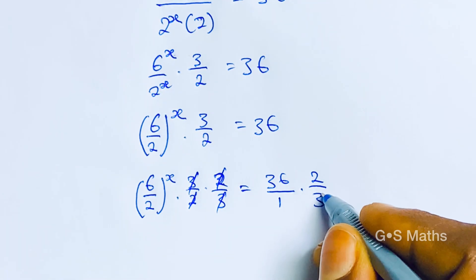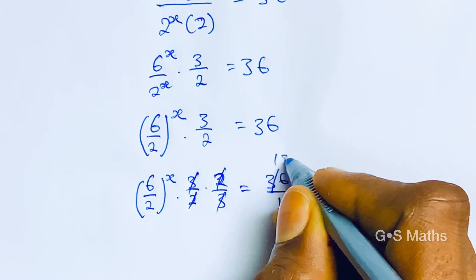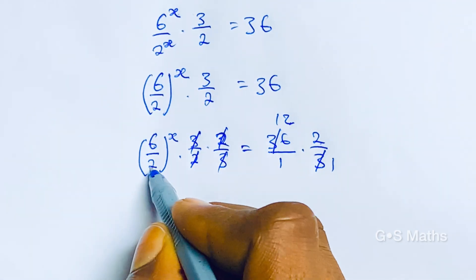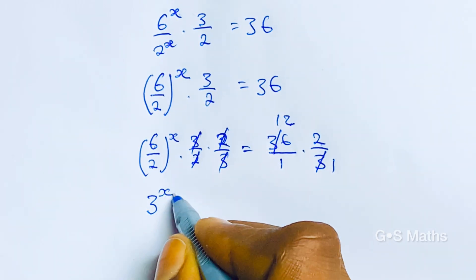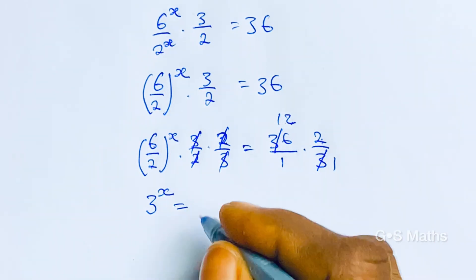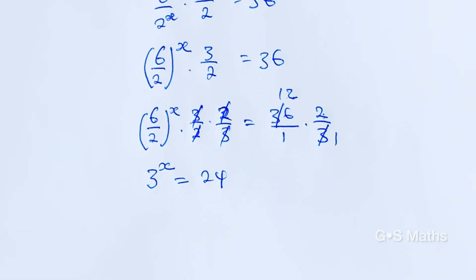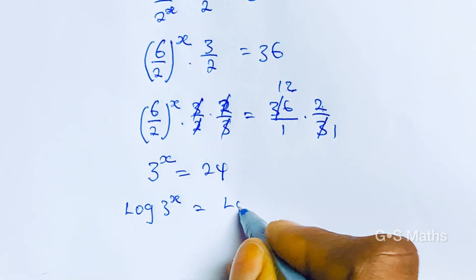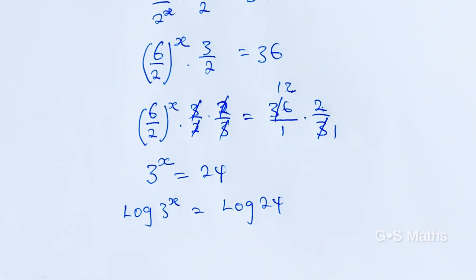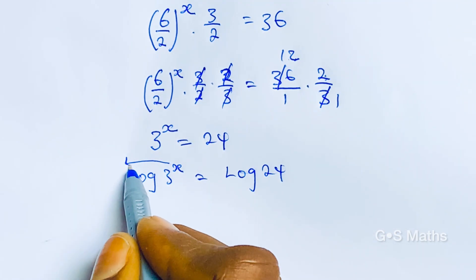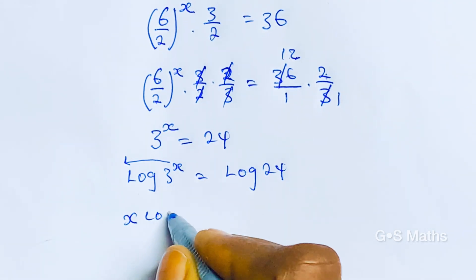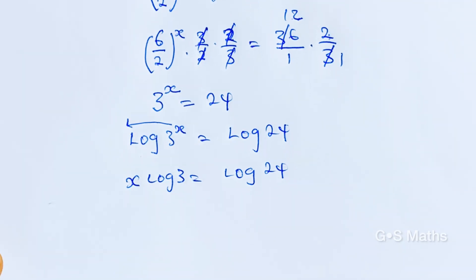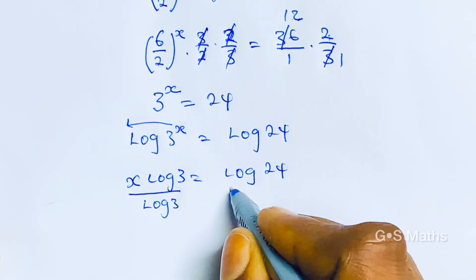So we have 6 over 2 to the power of x, multiplied by 3 over 2, multiplied by 2 over 3, equals 36 over 1 multiplied by 2 over 3. This cancels with this, and this cancels with this. Simplifying further: this cancels giving 1, this and this gives 12. So we are left with 6 divided by 2 to the power of x — which gives us 3 to the power of x — is equal to 12 multiplied by 2, which gives us 24.